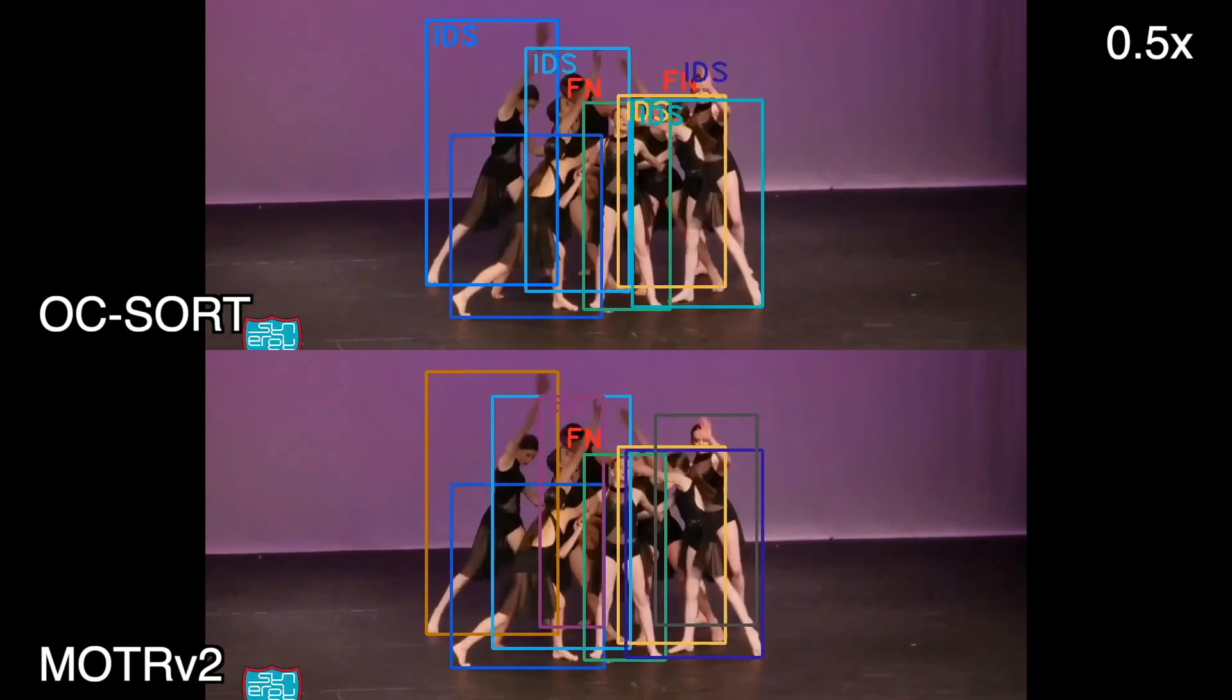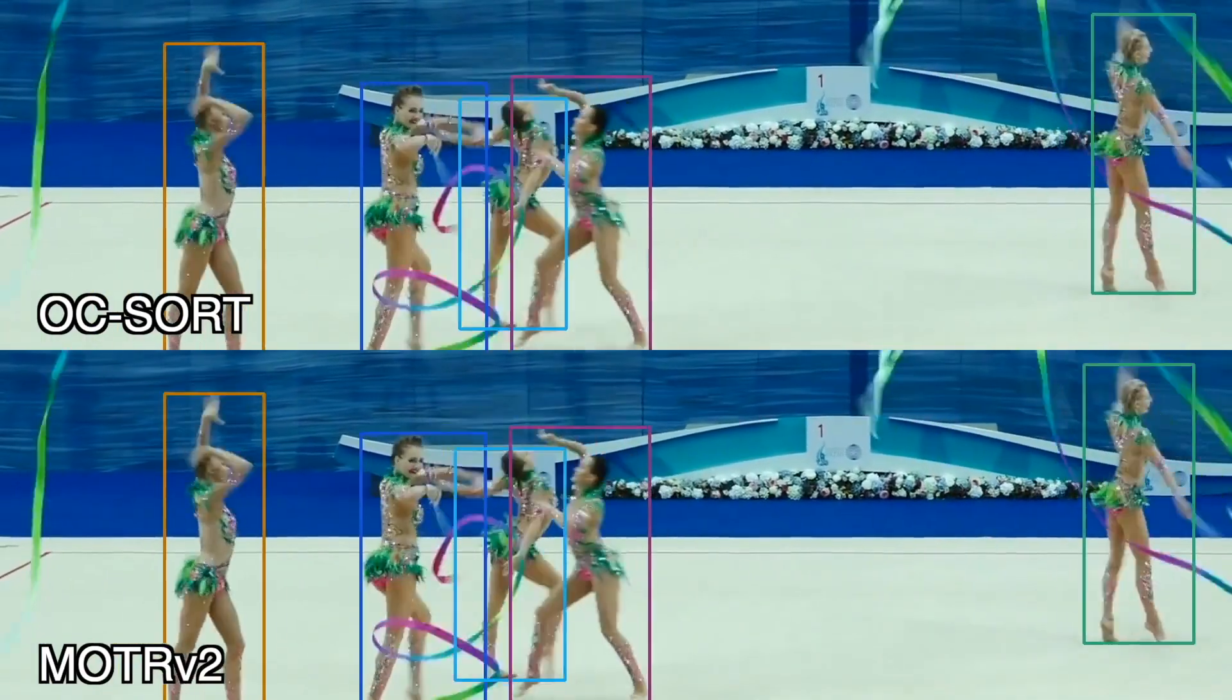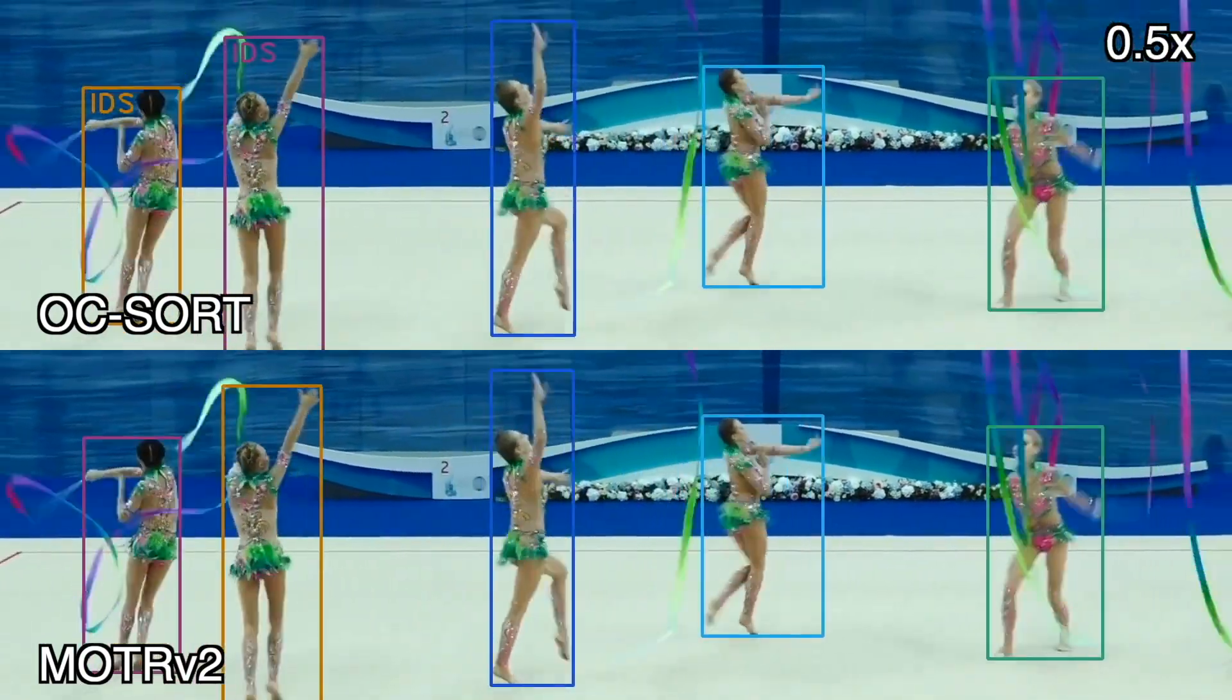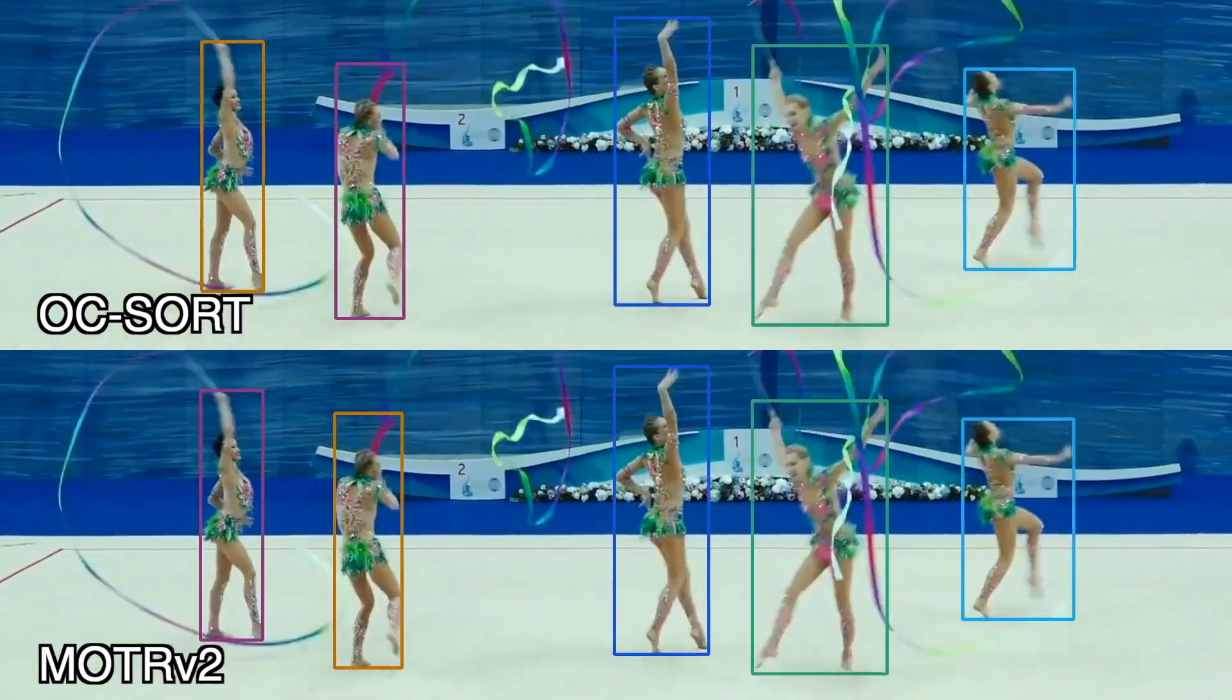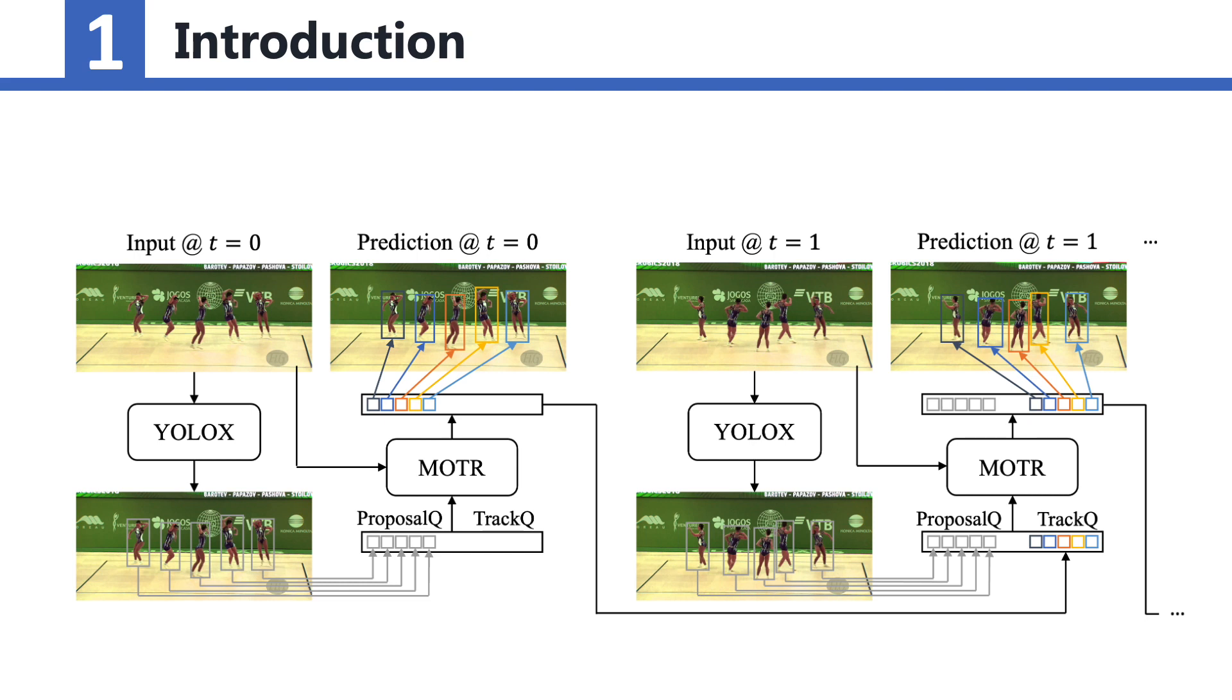We are the first place solution in the first multiple people tracking in group dance challenge at ECCV 2022. Here is the overall architecture of MOTR V2. We use the state-of-the-art detector YOLO-X to generate the proposal queries, which replace the detect queries in MOTR for detecting newborn objects.